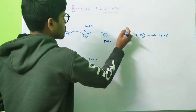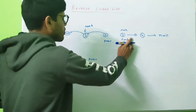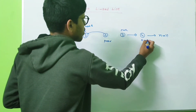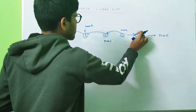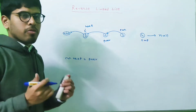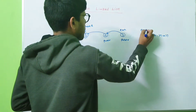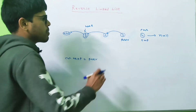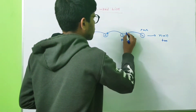We continue with the same procedure. Move temp to the next node, apply current.next = prev so the current node points to the previous one and is disconnected. Move prev to current and current to temp. Next iteration: move temp to the next node, apply current.next = prev — it points to this node. The link is disconnected.